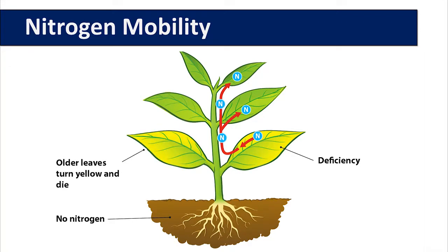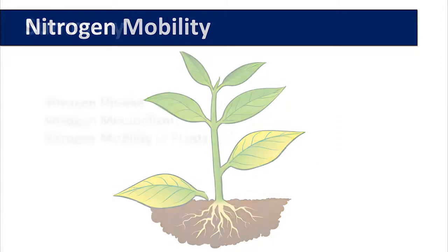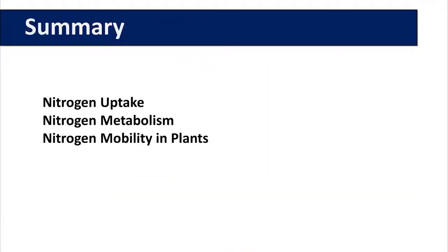Once this happens, the older leaves will turn yellow, and if the nitrogen deficiency symptom isn't corrected either with fertilizer or management of the root system, the leaves will fall off. This is what you learned in this module.